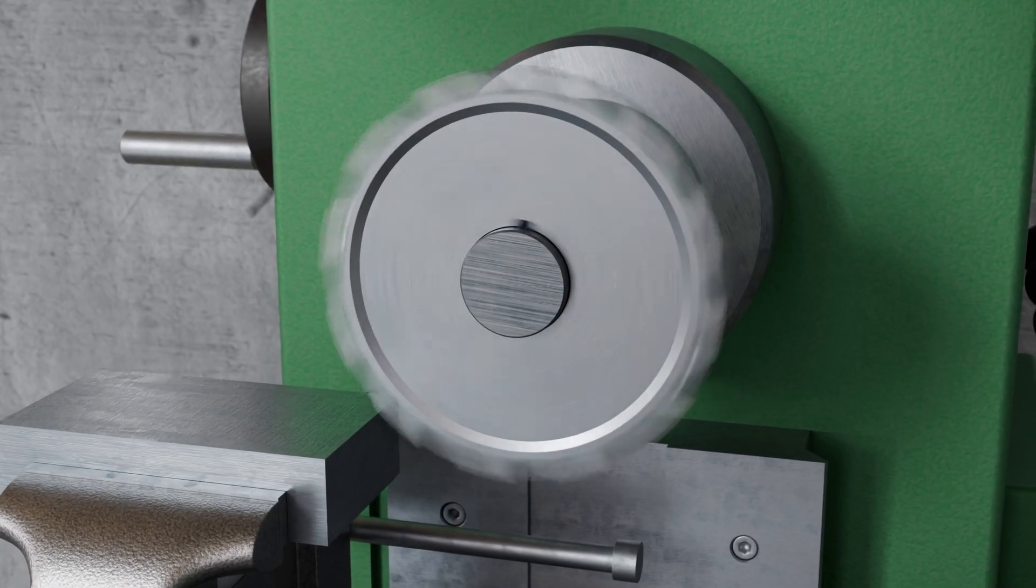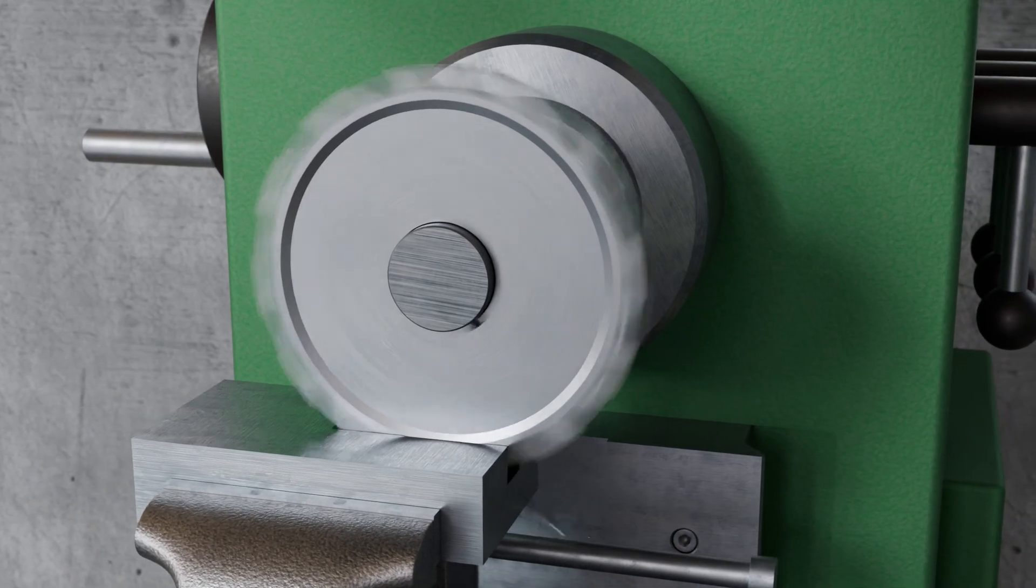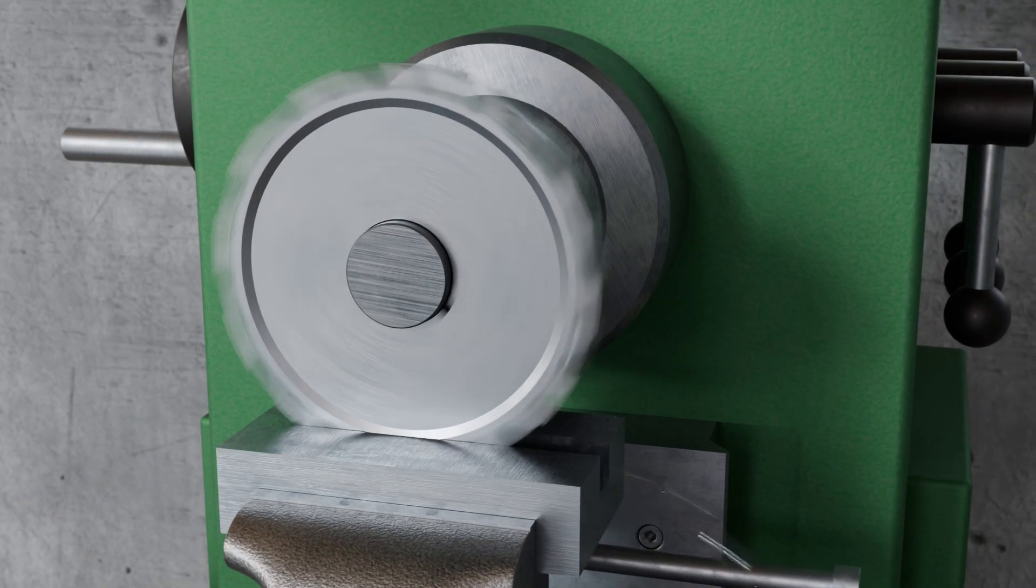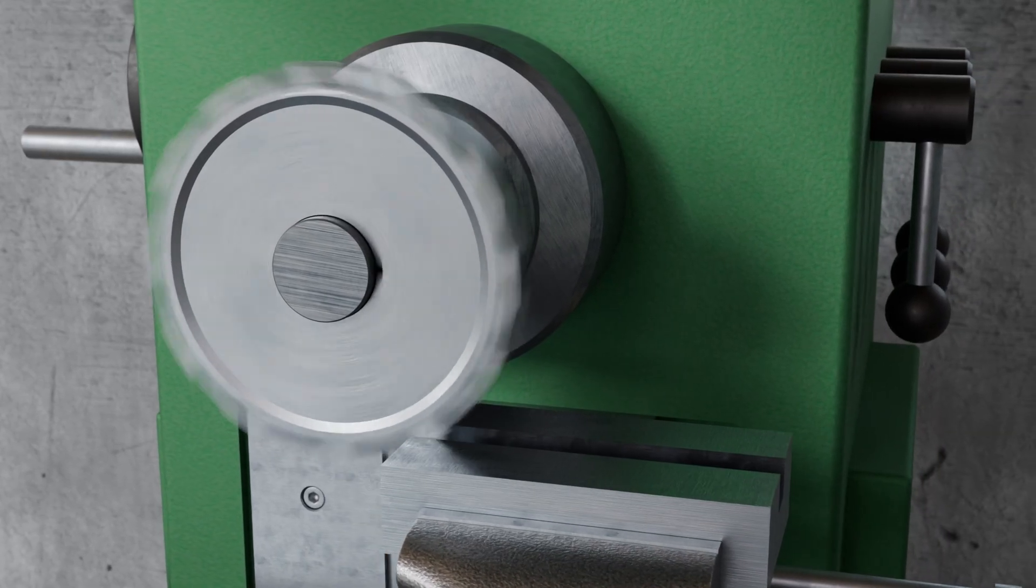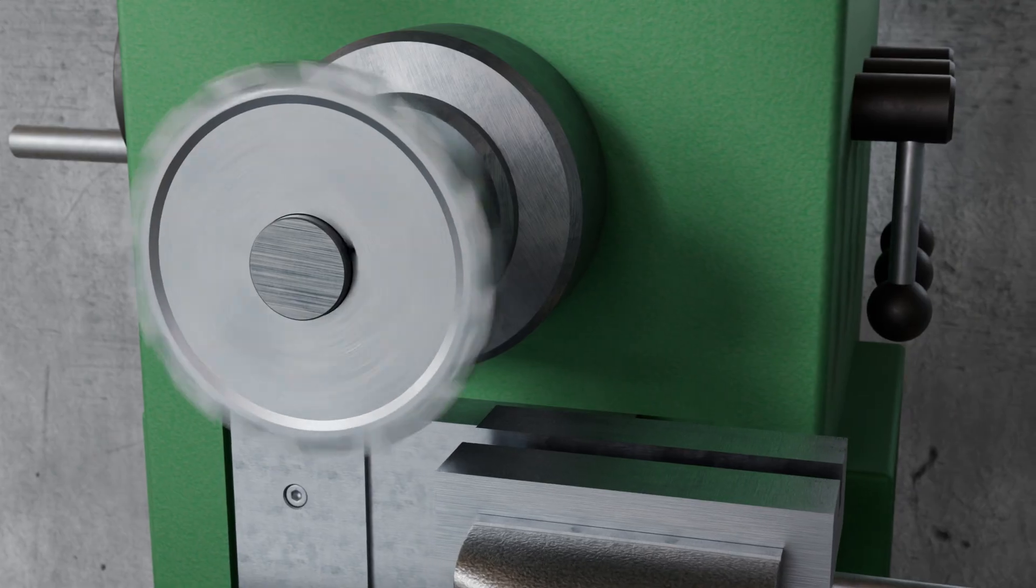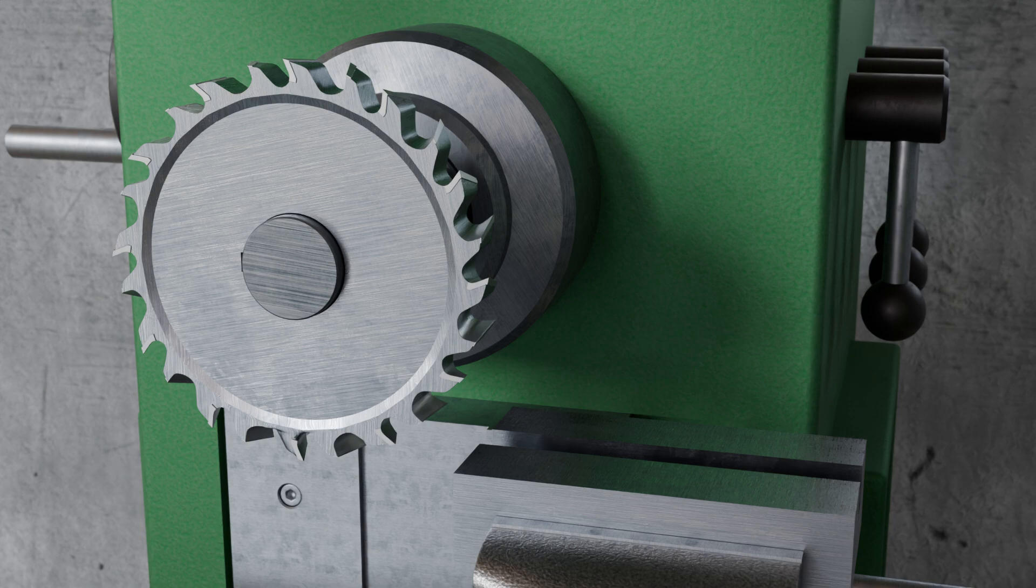These offer high stability and cutting performance even during deep cuts and are, under certain circumstances, less prone to vibration than end mills. For producing parallel grooves, multiple side and face cutters can also be arranged in parallel. Since an entire set of cutters is used in this case, the process is referred to as gang milling.